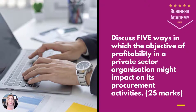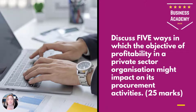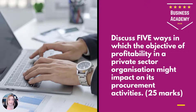The question is: discuss five ways in which the objective of profitability in a private sector organisation might impact on its procurement activities. So in plain English, this has been broken down to five ways that the need to get profit for an organisation might impact us as buyers.